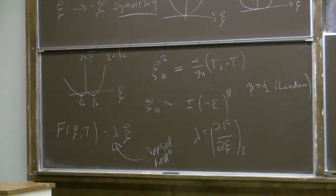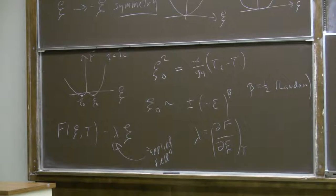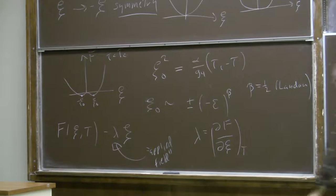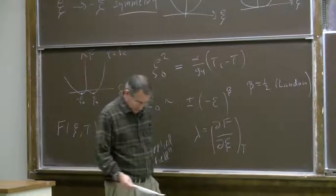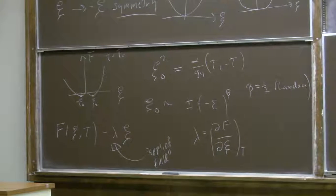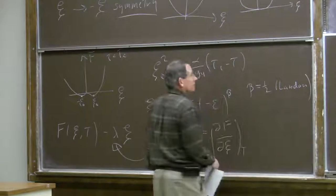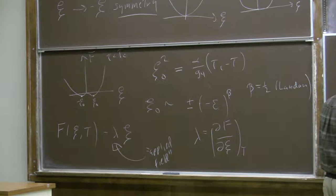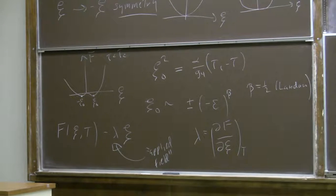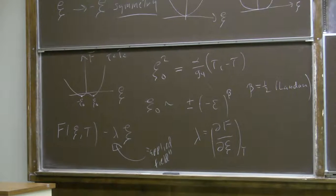The susceptibility is the derivative of the order parameter with respect to the applied field with temperature fixed. The inverse susceptibility is the derivative of lambda with respect to order parameter — the second derivative of the Helmholtz free energy with respect to order parameter with temperature fixed. Using our expression for F and taking another derivative, we can write chi inverse as a constant term which goes to zero when tau equals tau_c, plus a quadratic term from differentiating the quartic term twice, plus higher order terms.